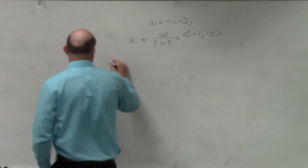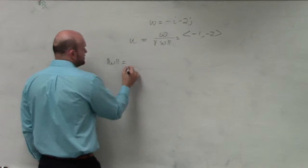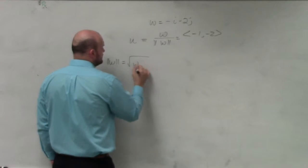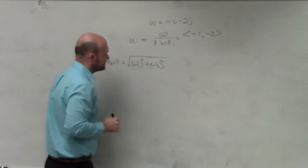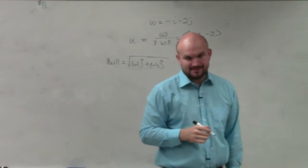So the magnitude of w is going to equal w1 squared plus w2 squared. Right, so that's correct.